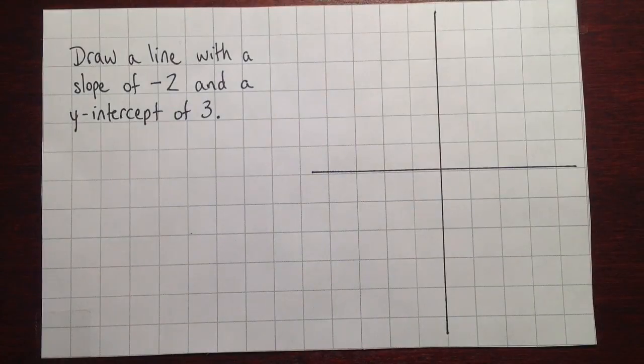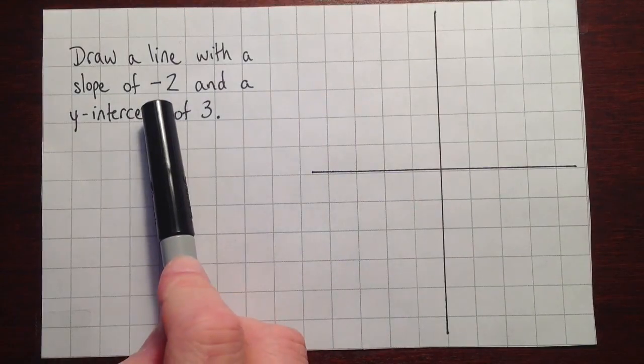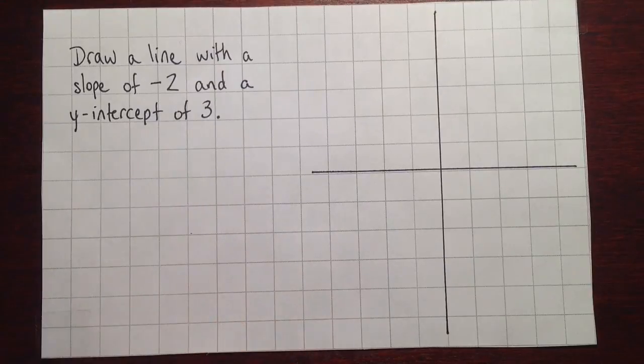So here's an example of a question which asks us to draw a line with a slope of negative 2 and a y-intercept of 3.